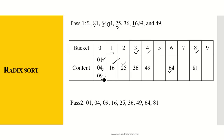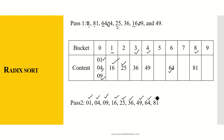Again, do not jumble up the series order — write down the output in the same way as written in the buckets. So the final sorted output is: 01, 04, 09, 16, 25, 36, 49, 64, and 81. You will see the number of passes required equals the number of digits the numbers have. This was the sorting of buckets for a 2-digit number.